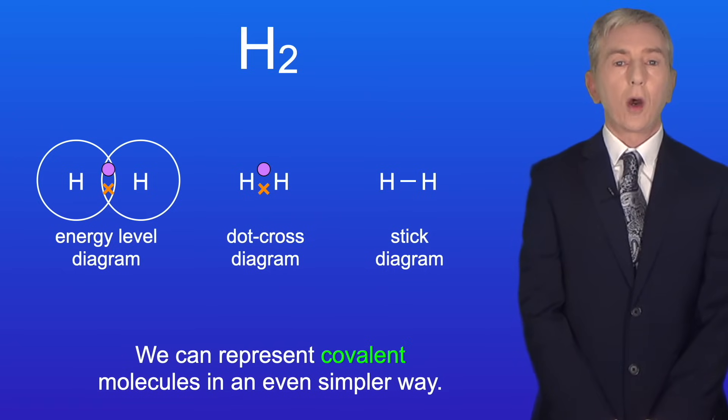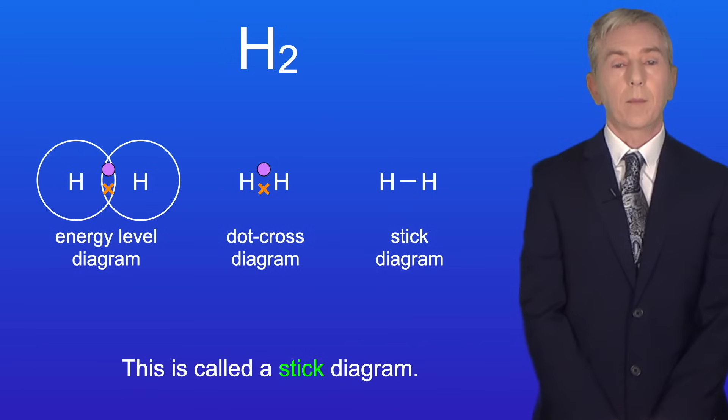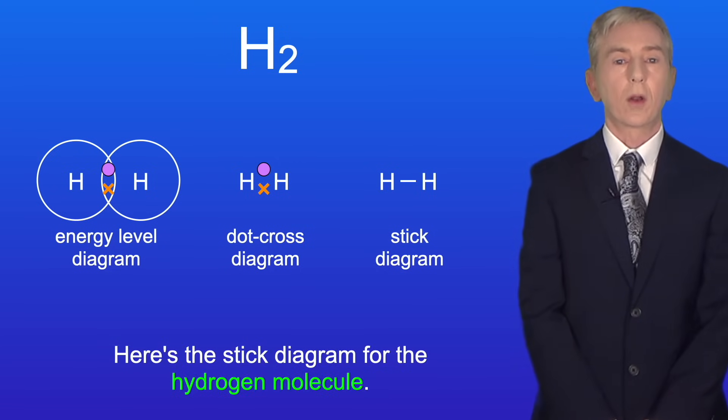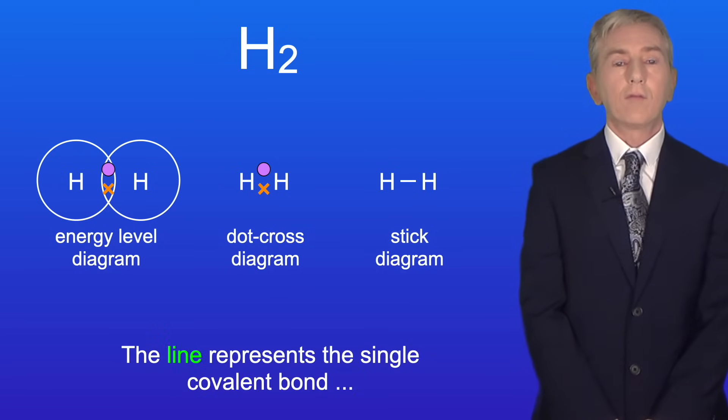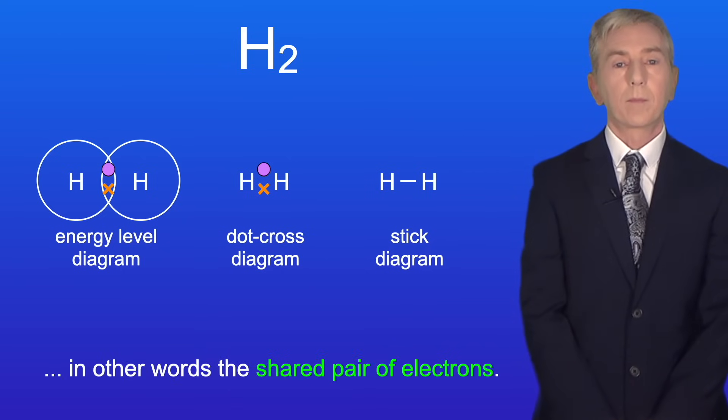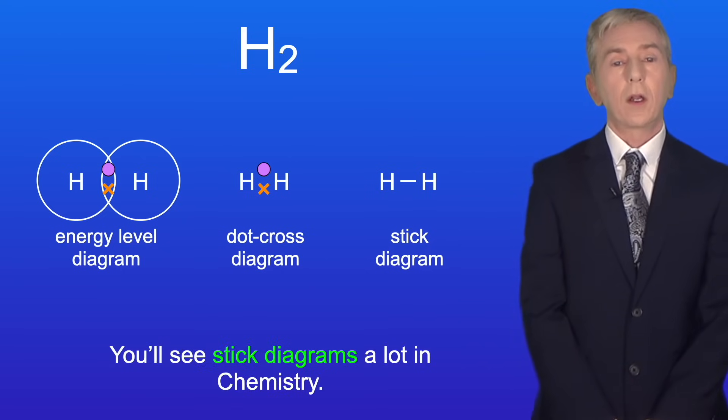Now we can represent covalent molecules in an even simpler way and this is called a stick diagram. So here's the stick diagram for the hydrogen molecule. The line represents the single covalent bond. In other words the shared pair of electrons. You'll see stick diagrams a lot in chemistry.